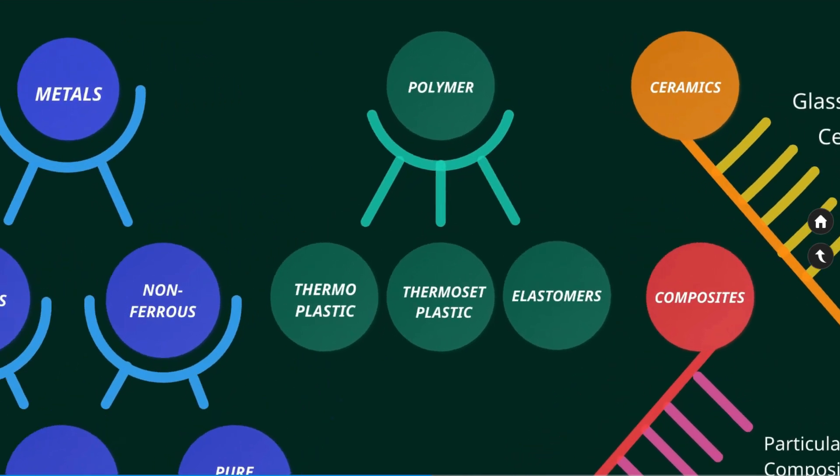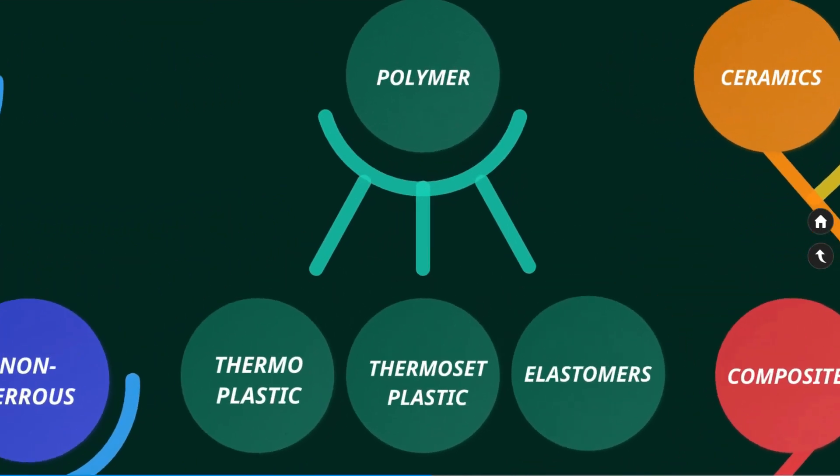Polymers are materials that consist of molecules formed by long chains of repeating units. They may be natural or synthetic. Many useful engineering materials are polymers, such as plastics, rubbers, fibers, adhesives, and coatings. Polymers are classified as thermoplastic polymers, thermosetting polymers, and elastomers. The classification of thermoplastic and thermoset is based on their response to heat.